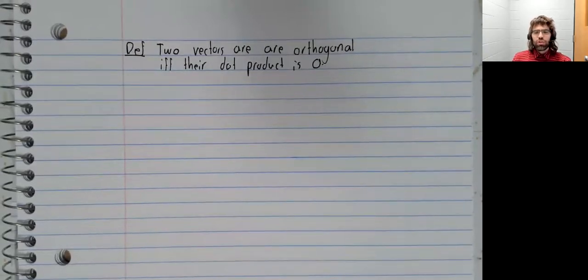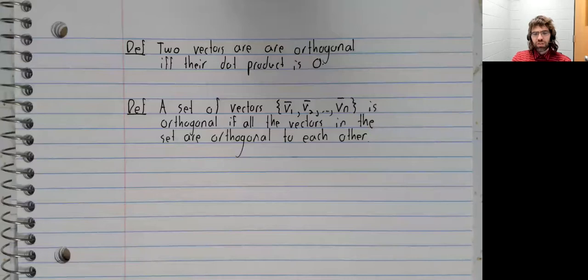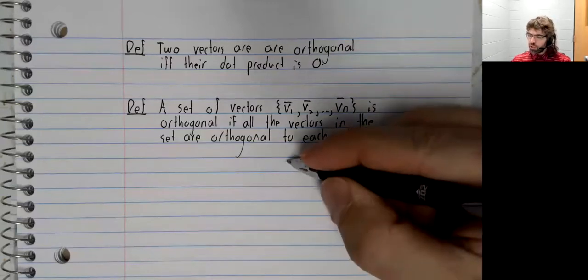We'll now generalize this definition. A set of vectors is orthogonal if all the vectors in the set are orthogonal to each other.